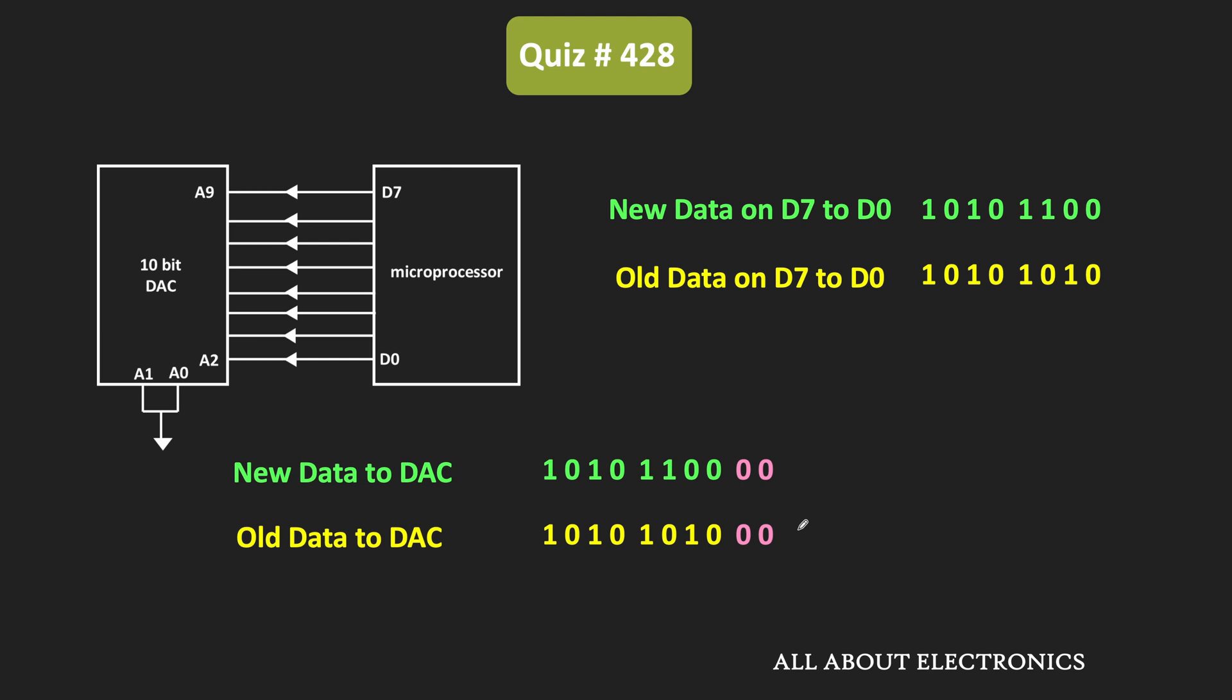Now, if you compare these data inputs, the difference between them is equal to 1000. Or in decimal, that corresponds to 8. That means between these two data inputs, there is a difference of 8 counts.